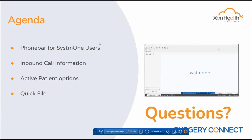During this session we've had a brief look at the phone bar for System 1 users. We've looked at the inbound call pop-up information — if there is more than one patient with that contact number you'll have a list of patient names so you can check who you're speaking to and click the relevant name to speed up calls. We've also looked at the active patient options, the quick file settings, and how you can move the phone bar around the screen.